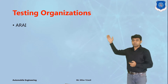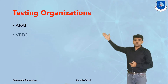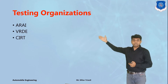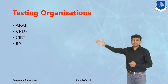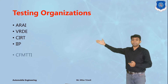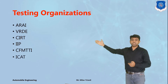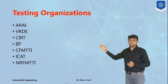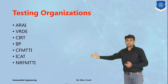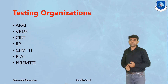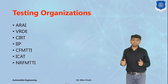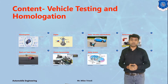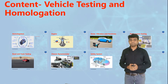The government of India has given this work to seven different testing agencies: the Automotive Research Association of India (ARAI), Vehicle Research and Development Establishment (VRDE), Central Institute of Road Transport (CIRT), Indian Institute of Petroleum (IIP), Central Farm Machinery Training and Testing Institute (CFMTTI), International Centre for Automotive Technology (ICAT), and Northern Region Farm Machinery Training and Testing Institute. These are the seven testing organizations in India carrying out the testing work.